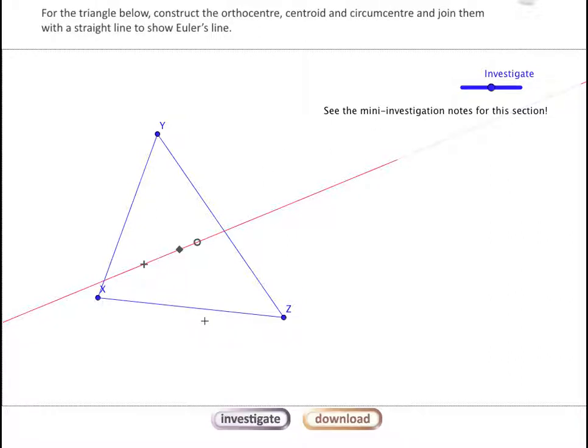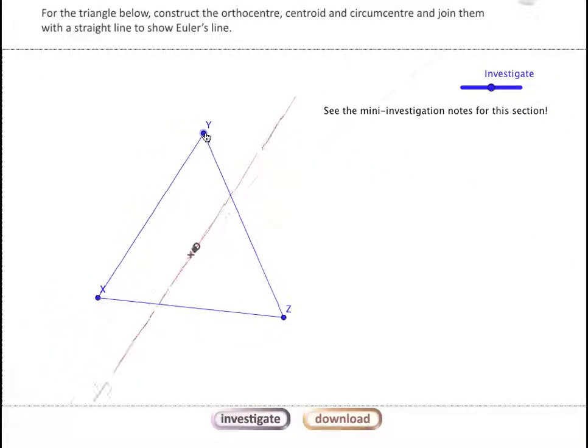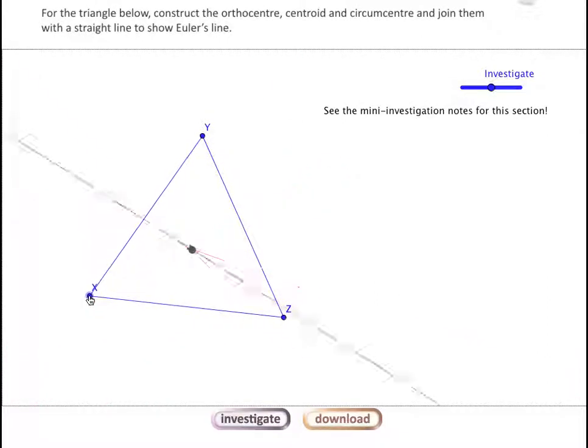One of the things that naturally comes to mind when you start to explore this is, is it possible to get all three of those points to coexist on a common point? Can we get them all to overlap?